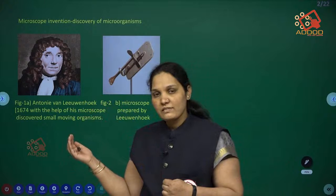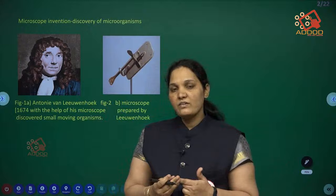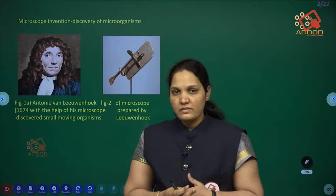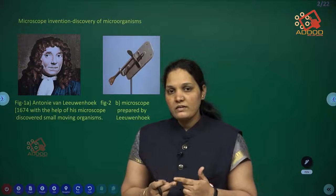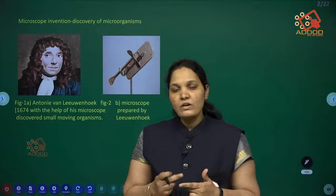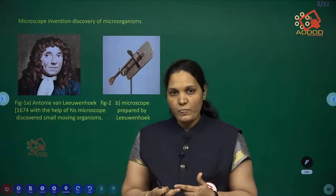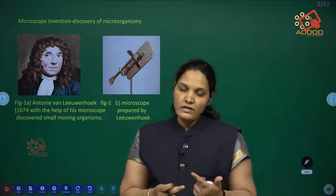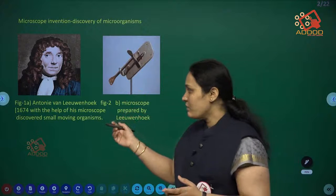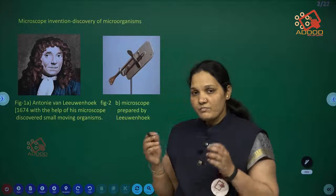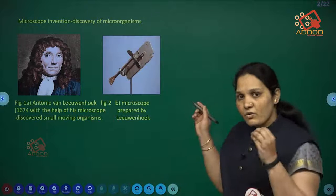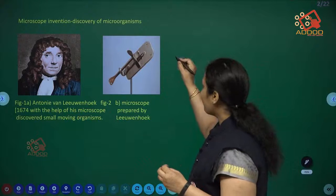Antony van Leeuwenhoek was a scientist with a curiosity for making magnifying glasses. He used to observe many different things, which led him to develop powerful microscopes. With the help of the microscope we are able to see microorganisms. In 1674, he observed moving particles in a drop of pond water.